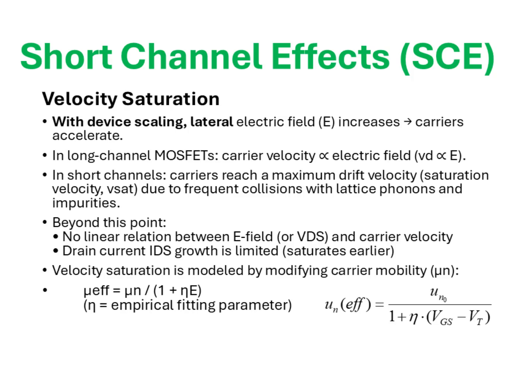This is why the drain current tends to saturate earlier compared to long channel behavior, even at relatively lower voltages. To capture this effect in analytical models, the effective mobility of carriers is expressed in a field-dependent form. One commonly used model modifies the electron mobility term as a function of the electric field E, where ΘITER is an empirical fitting parameter that accounts for how rapidly mobility degrades with increasing electric field. Thus, velocity saturation is a central factor in short channel MOSFET operation, directly impacting drive current and limiting the performance gains that scaling was expected to provide.